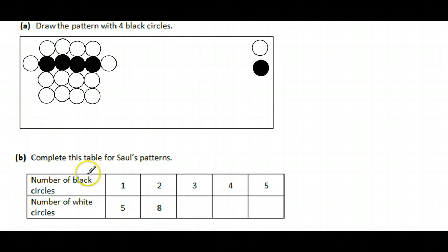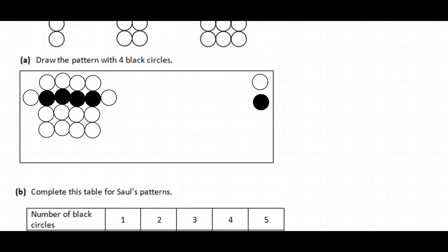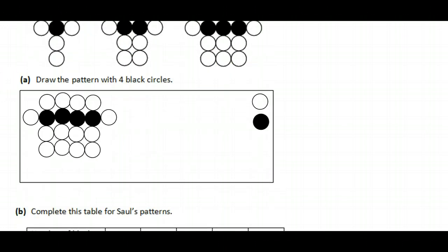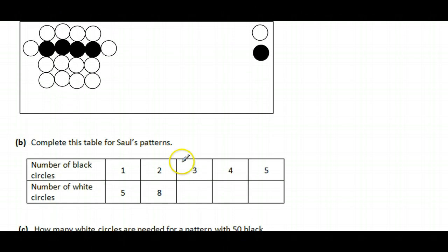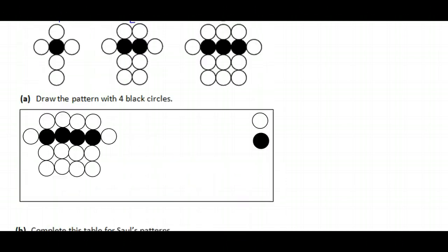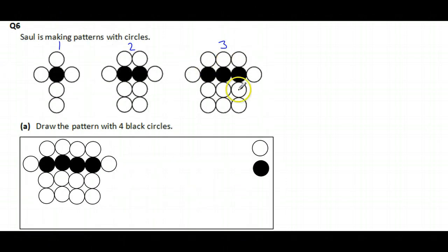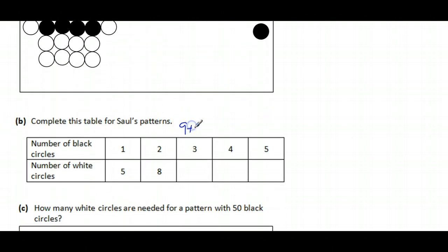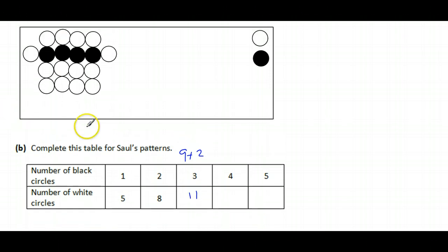Okay, let's go down. Complete the table now. So in pattern number three there's three black circles, and the number of white circles, well there's three, six, nine plus the two, makes nine plus two. So there's nine plus two, isn't there? So there's 11.